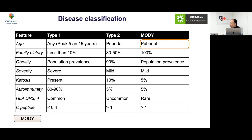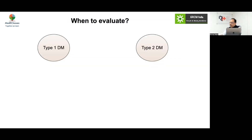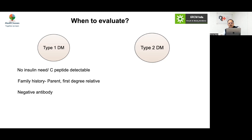MODY can arise from a new mutation. Typical manifestation is between 10 to 25 years. It is an autosomal dominant disease and ketosis is rare. Especially if antibody is negative, you start thinking of MODY. Type 1 individuals with no or less than 0.5 units per kg per day insulin need, persistently detectable C-peptide, strong family history, and negative antibody — think of monogenic diabetes.